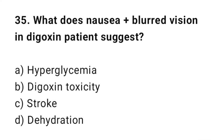Question number 35: What does nausea plus blurred vision in a digoxin patient suggest? The correct answer is B, digoxin toxicity.